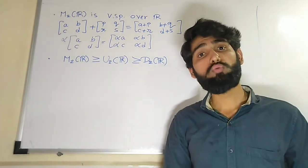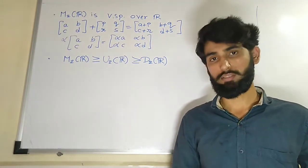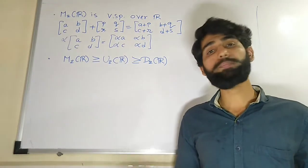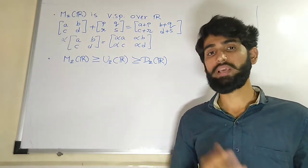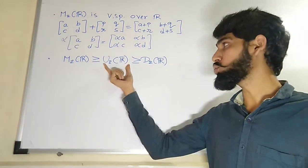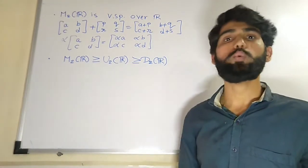In the last lecture we have seen that M2R is a vector space over R under this operation. We have proved that it is satisfying all those 10 conditions. Then after proving that M2R is a vector space, we have seen that U2R is a vector subspace of M2R.